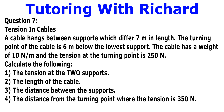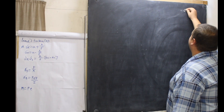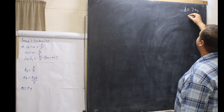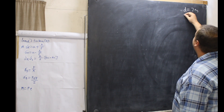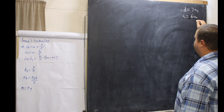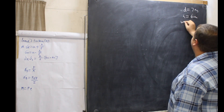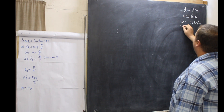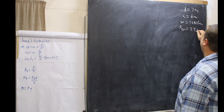Question 7 goes like this: A cable hangs between two supports which differ 7 meters in length. The turning point of the cable is 6 meters below the lowest support. The cable has a weight of 10 newtons per meter and the tension at the turning point is 250 newtons. So, D equals 7 meters, H equals 6 meters, weight equals 10 newtons per meter, and F at the turning point is 250 newtons.